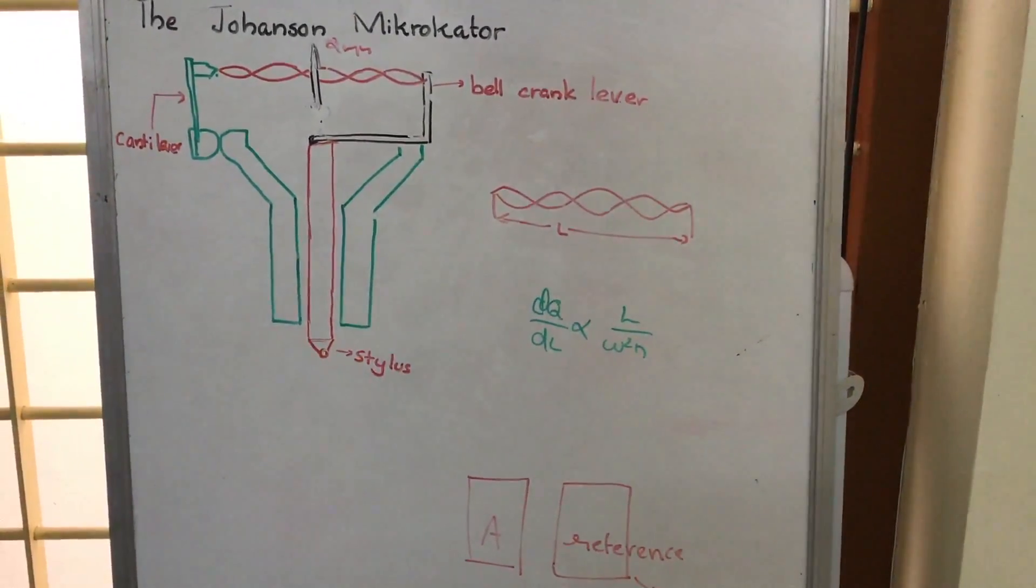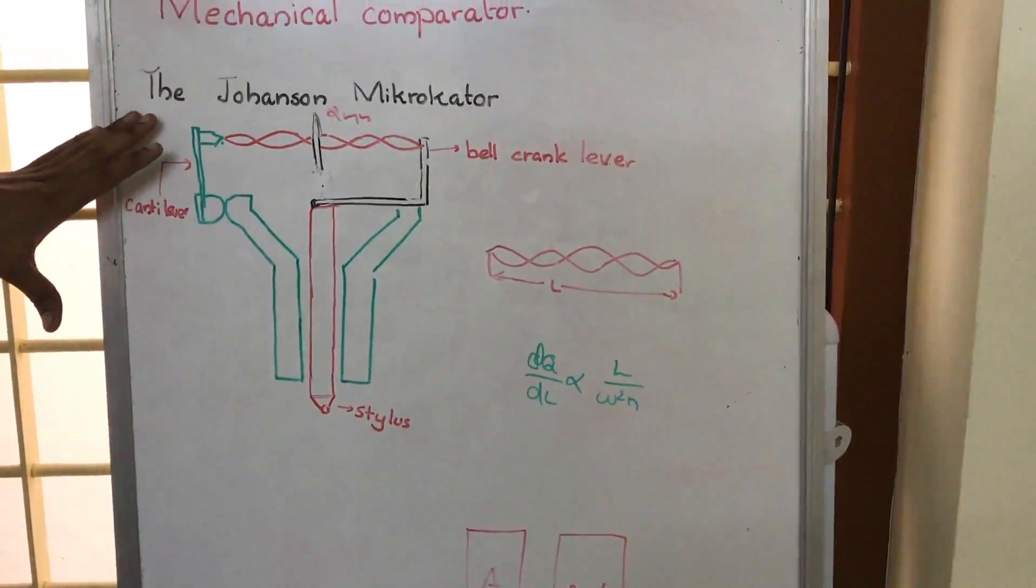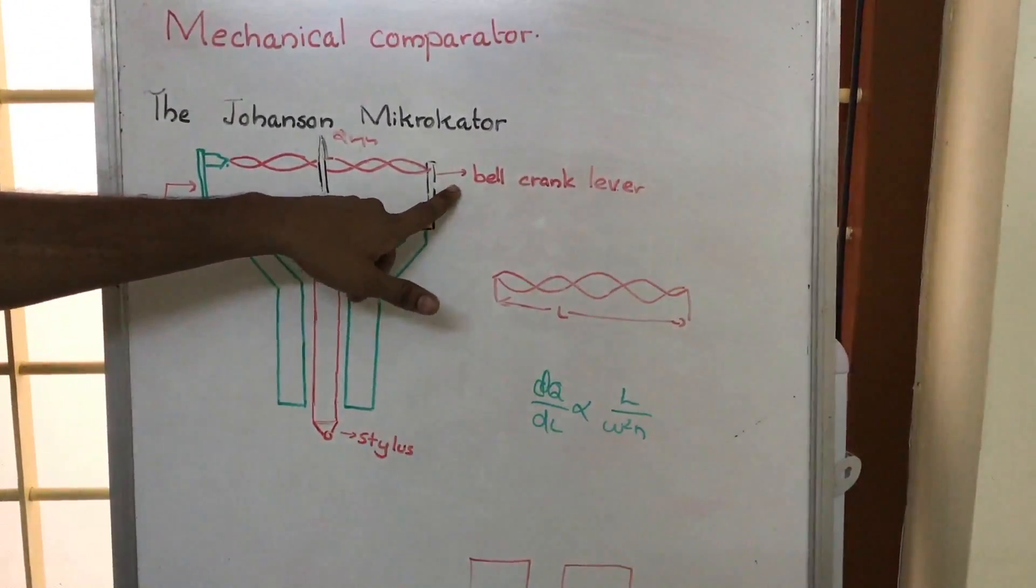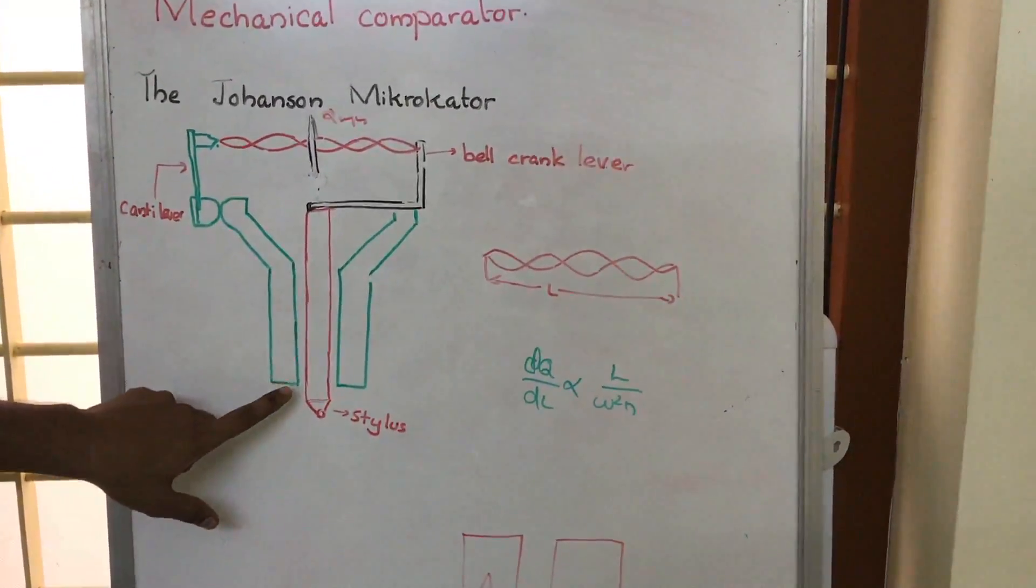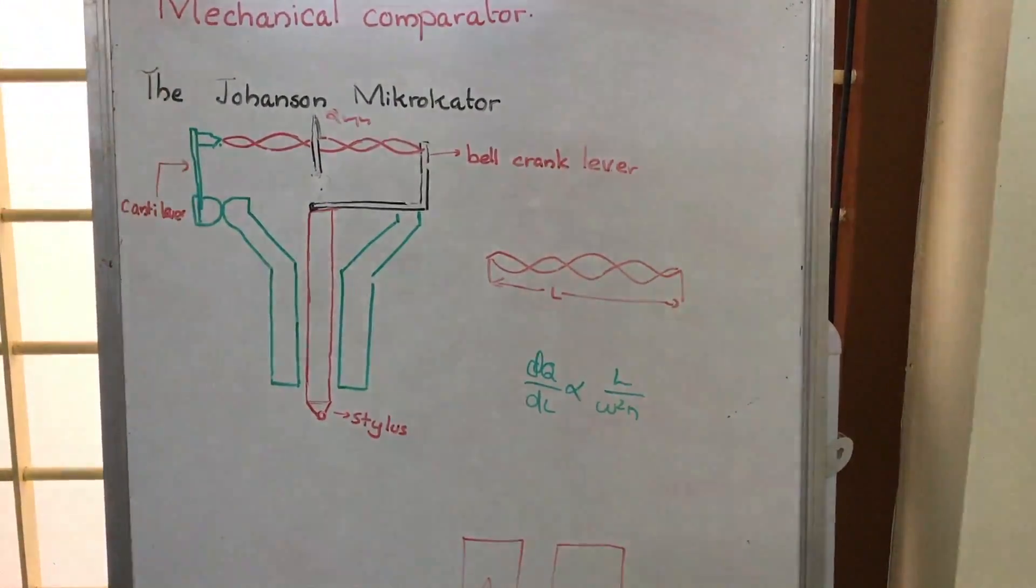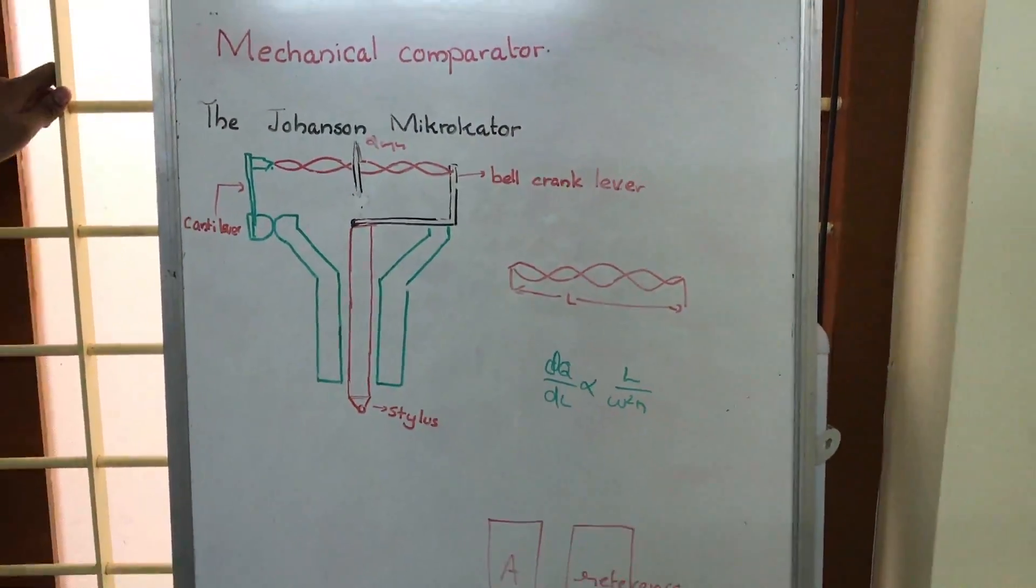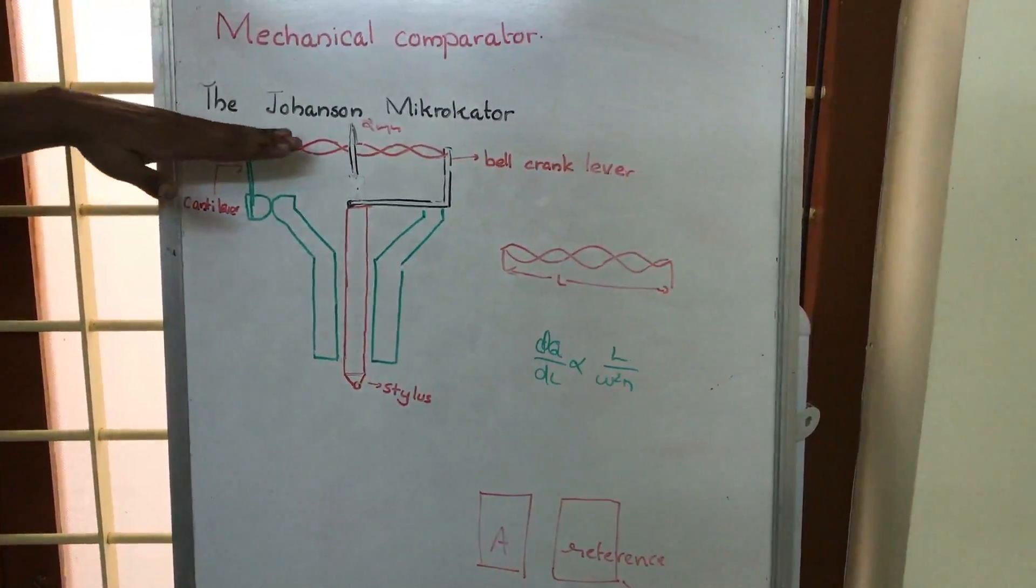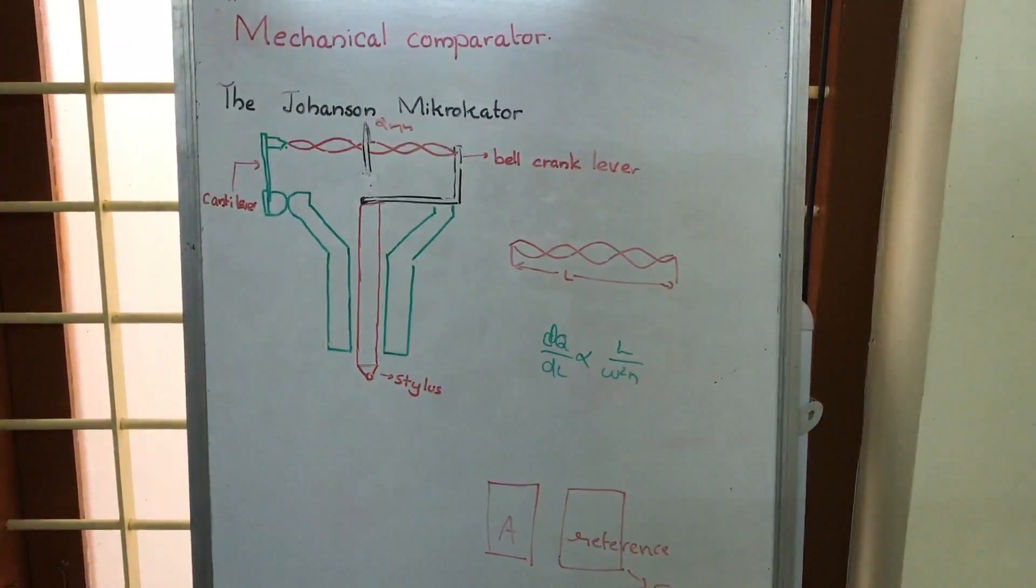This is the Johnson microcator, where we use a bell crank lever and a twisted strip along with the stylus to determine the dimension. As we use mechanical means, we classify this particular instrument under mechanical comparators.